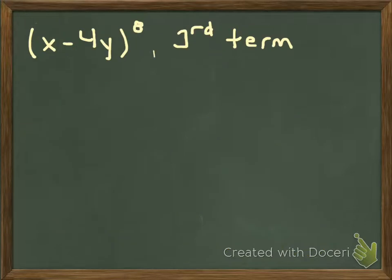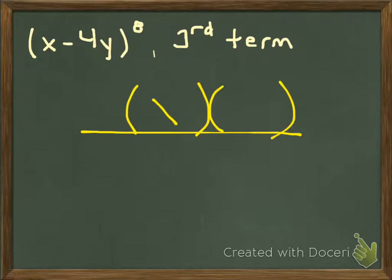Two more examples. We'll go more quickly through these two. x minus 4y to the eighth. I want the third term. Here's my term. Nice little blank. Two sets of parentheses. Make sure you leave a lot of space. Every term will have some power of x. Every term will have some power of negative 4y, and here the parentheses are really big.